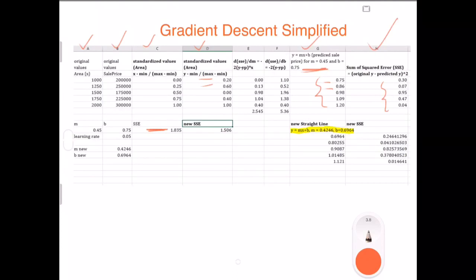Then my intention was to change and reduce 1.835, and for that I had to try new values for M and B. So how did I calculate M and B? The new value of M was the old value of M minus the learning rate times the sum of squared error derivative with respect to M.